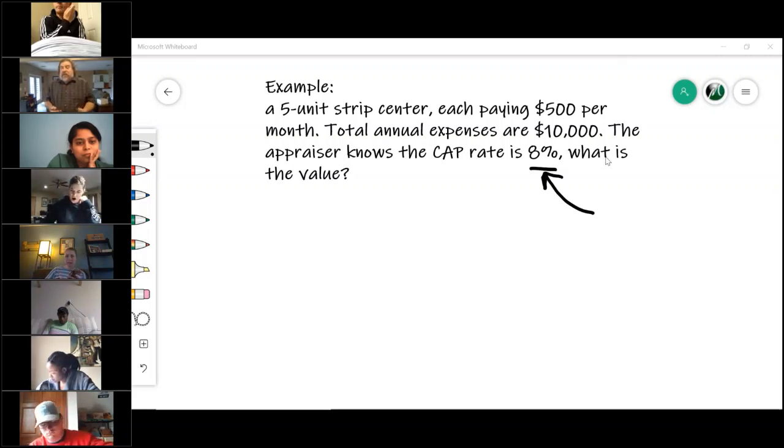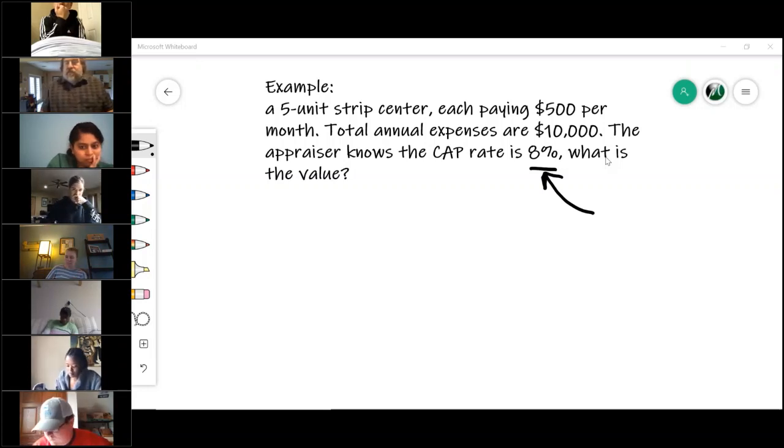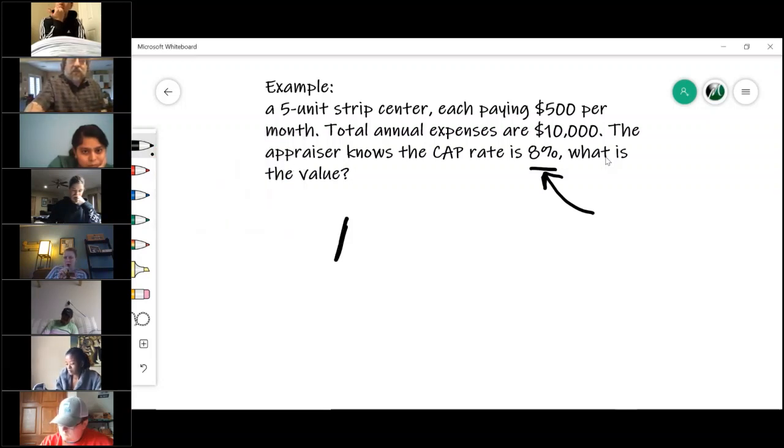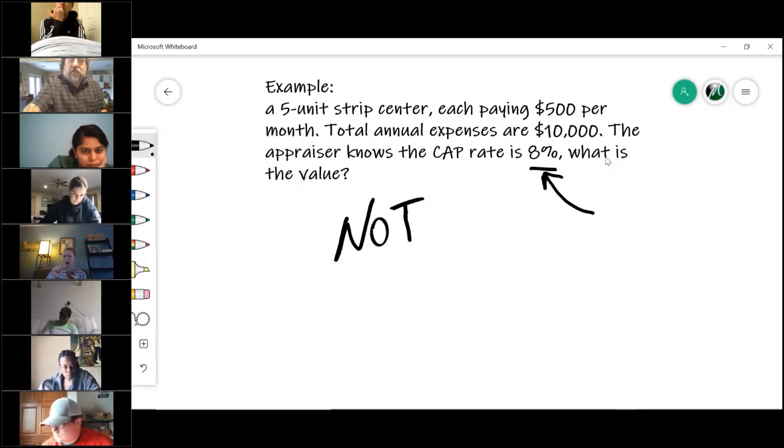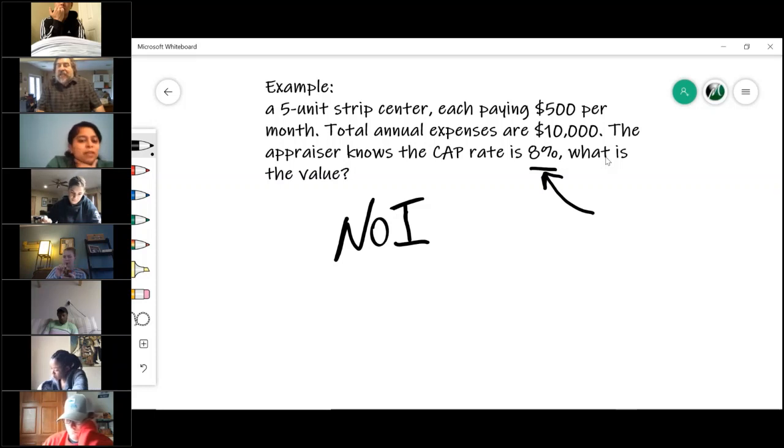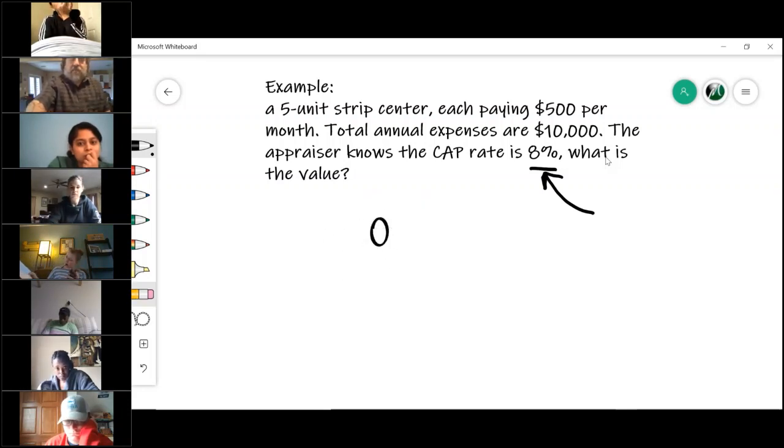What is the value of this property? The first thing you would need to understand is with cap rates, I have to use the NOI. So how do I get to the net operating income? That is the gross income minus the expenses.